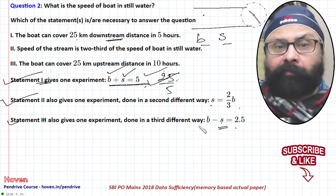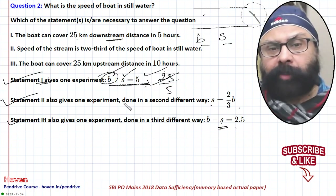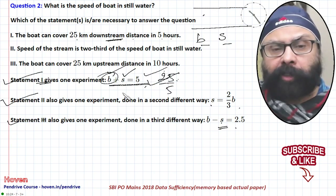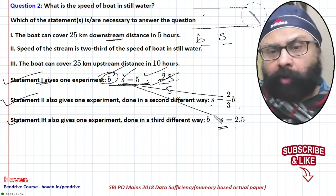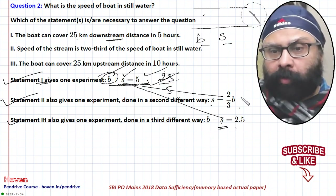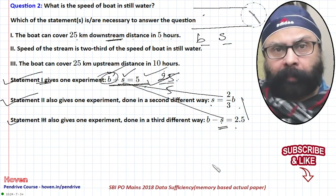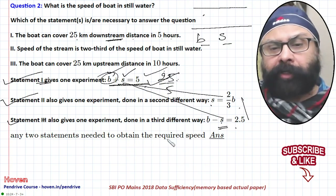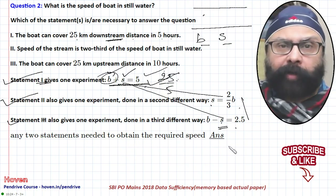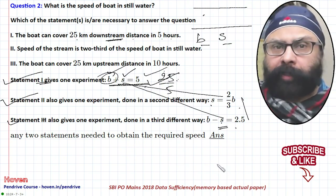We need b. It can be obtained by solving any two of these three equations together — statements 1 and 2, statements 1 and 3, or statements 2 and 3. So our answer is that any two statements are needed to obtain the required speed.